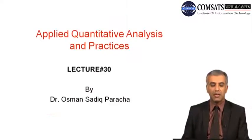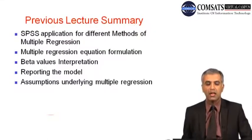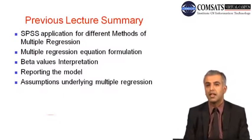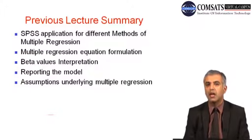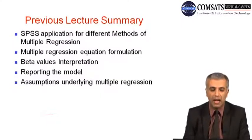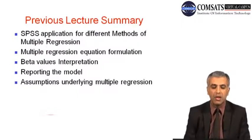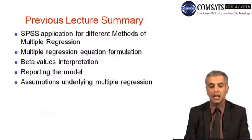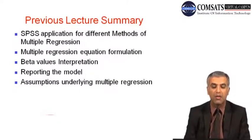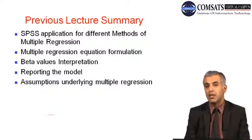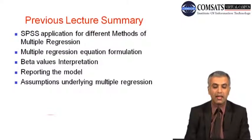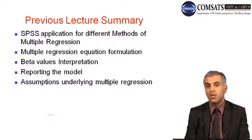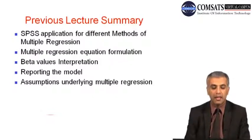Previously, we had a discussion on different methods for multiple regression, how we can apply those methods in SPSS, and how meaningful results can be obtained from the software. We also formulated the regression equation in a practical example, and then had the interpretation of the beta values of the independent and dependent variables included in that example. Then we discussed about how to report that specific model, and lastly, we discussed about the assumptions underlying multiple regression.